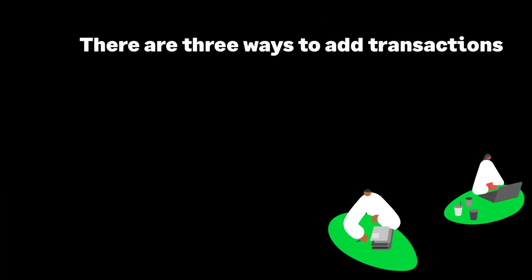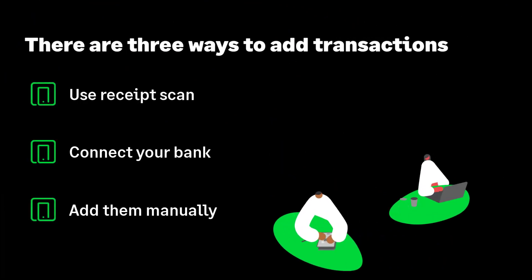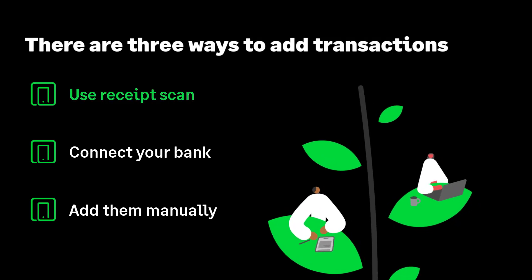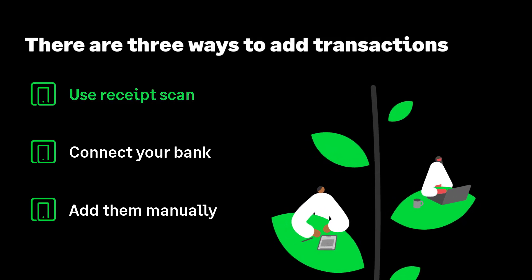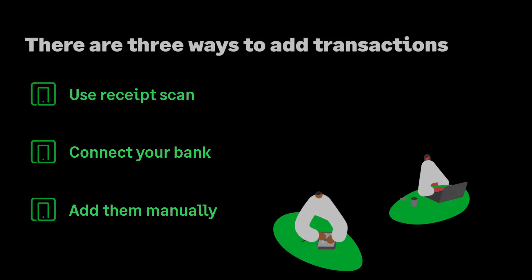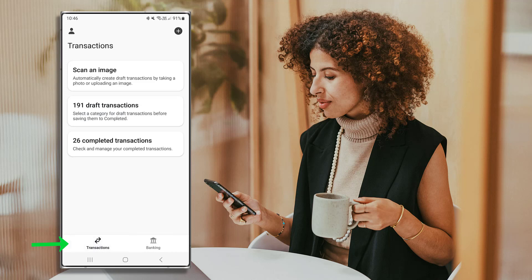Let's move on to Transactions. You can add transactions in three different ways: auto create transactions using receipt scan, from bank feeds, or add transactions manually. To access the Transactions area, press Transactions.